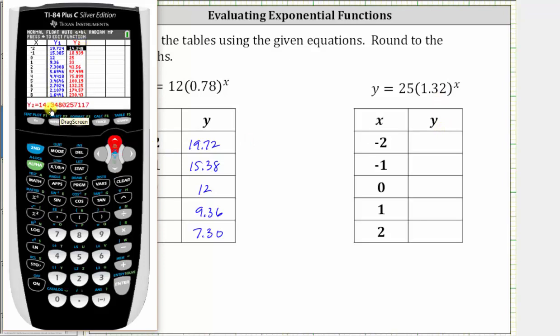Y is approximately 14.35 when x is negative two. Y is approximately 18.94 when x is negative one. Y is equal to 25 when x is zero. Y is equal to 33 when x is one. And finally, y equals 43.56 when x is two.